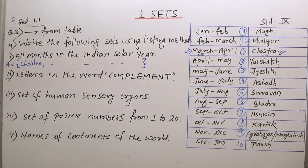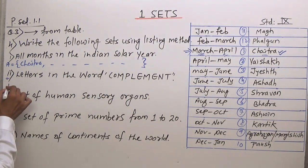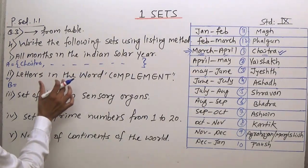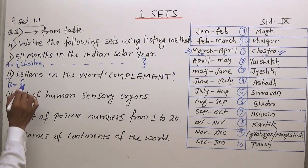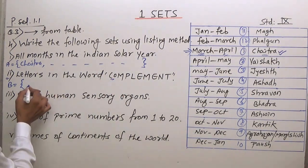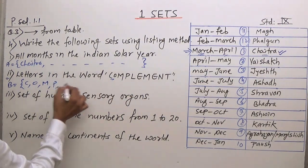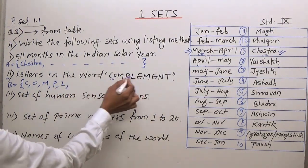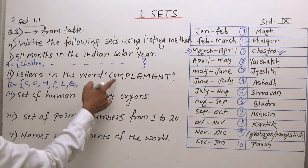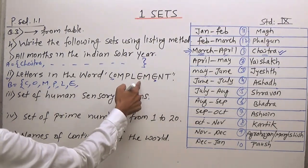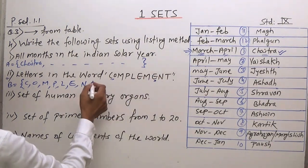Second portion: letters in the word 'complement.' We repeat letters only once. So we write C, O, M, P, L, E — then repeat is skipped — then N, T.